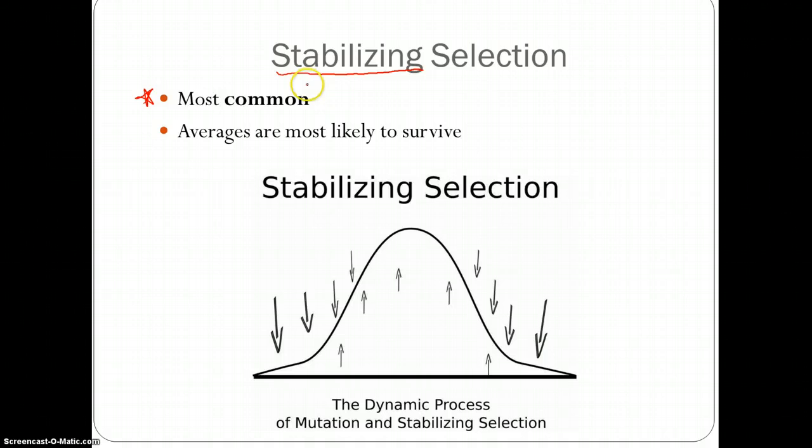What this means is that the averages in a population are most likely to survive. We will provide an example in a second, but just to explain this graph right here. If you look below, we see this graph labeled stabilizing selection. This graph is showing the survival rate based on the traits selected for by natural selection. This right here will always be the average in a graph. This center line, and these lower corners will always be the extremes.